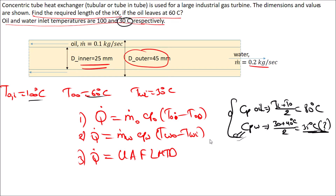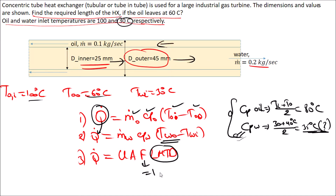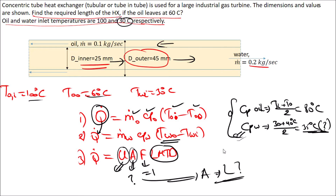We will solve the problem in Excel. We know m-dot for oil and will find Cp from a table. We calculate Q-dot from the oil side, then substitute back to find the water outlet temperature. LMTD is computed next; F equals one for a counter-flow heat exchanger where fluids move in opposite directions. From Q = U·A·F·LMTD, we find the area and then the length.